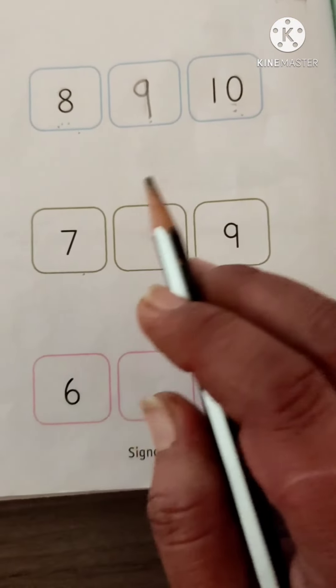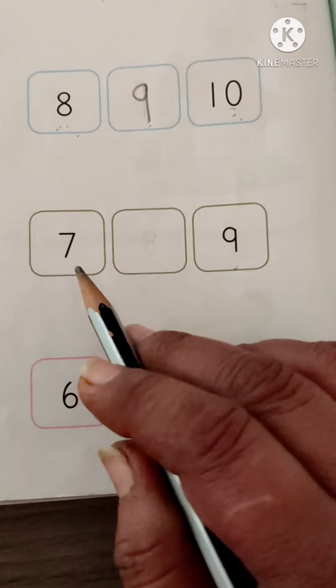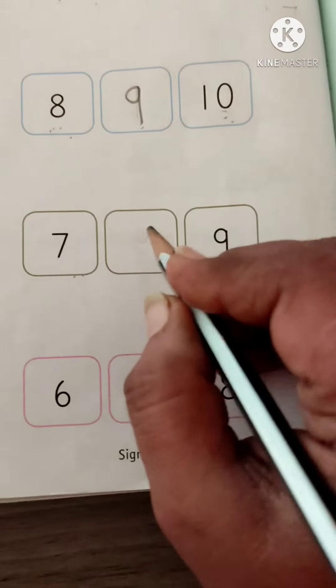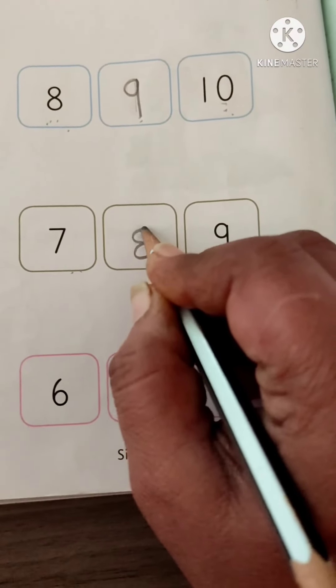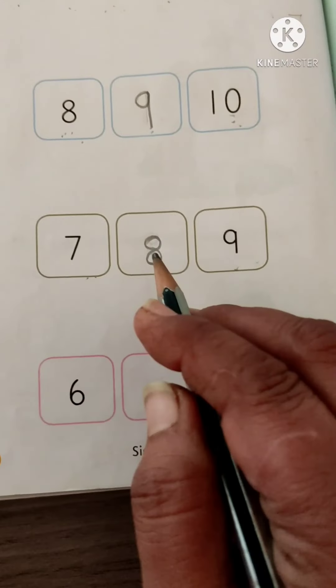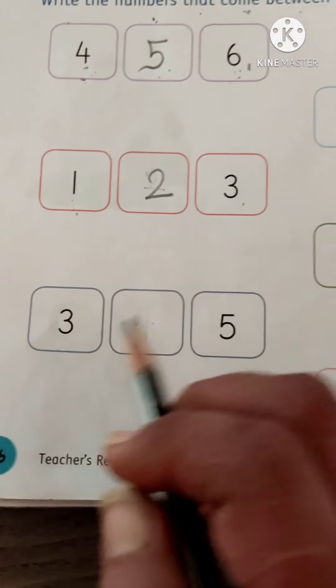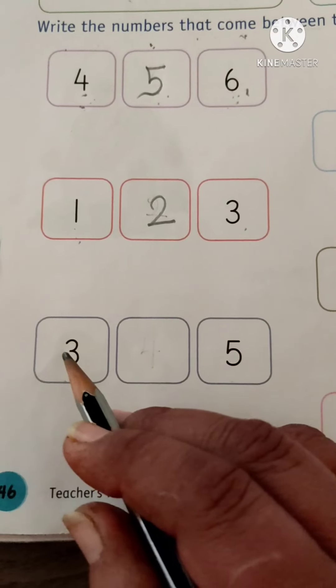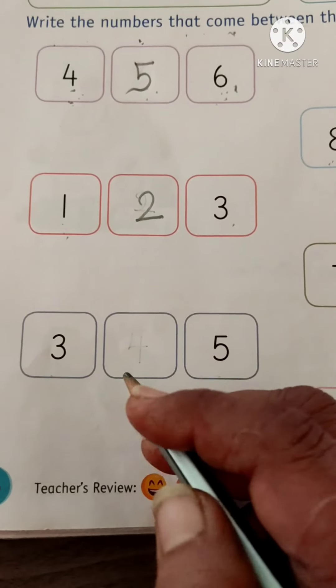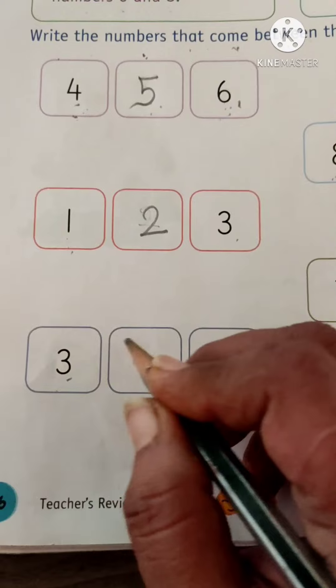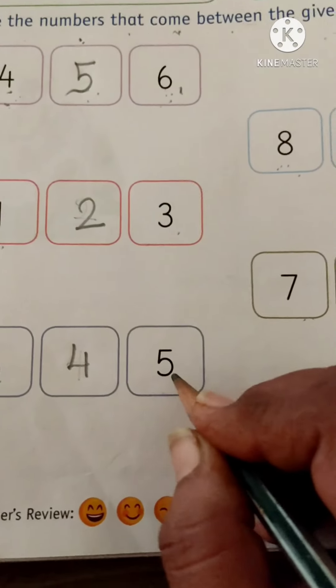7 and 9. Which number comes between 7 and 9? 8. So, write 8. 7, 8, 9. Which number comes between 3 and 5? 3, 4, 5.